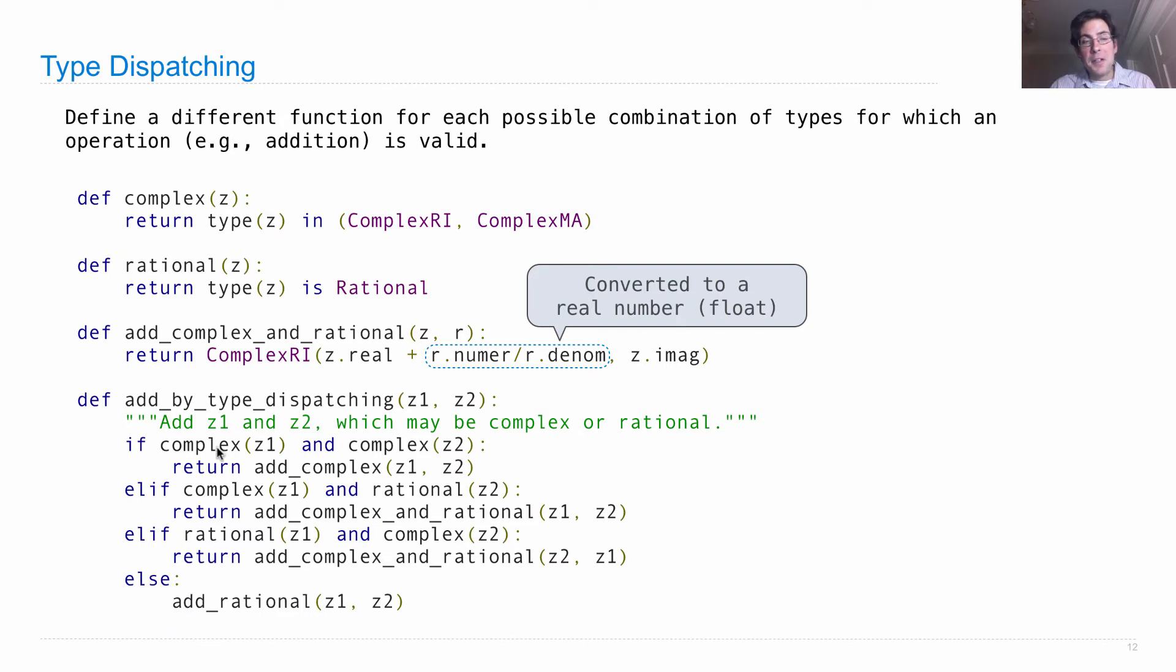And finally, if we know that they're not both complex, and it's not the case that one is complex and the other is rational, well then they're both rational, at least assuming that they're just the types we've created so far. And so, we'll call add_rational to add those together.